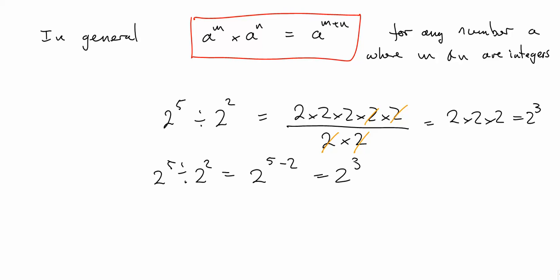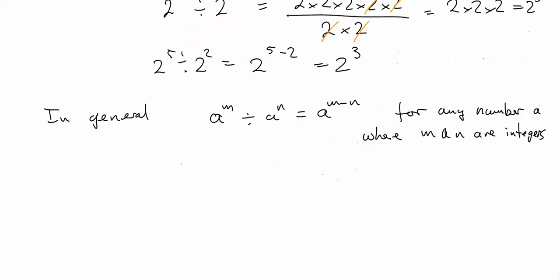Again, this works in general. In general, a to the m divided by a to the n is a to the m minus n. And again, that works for any number a, provided m and n are integers.